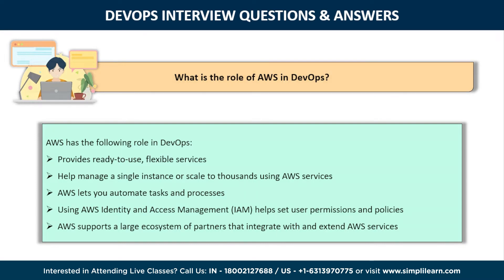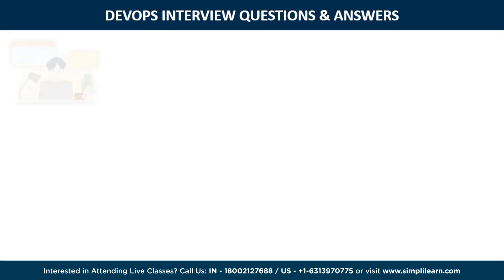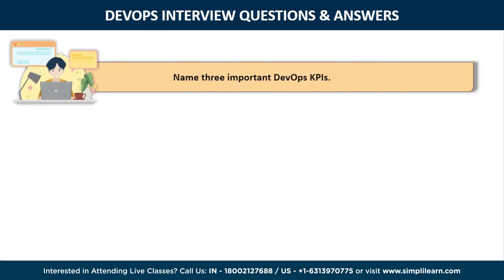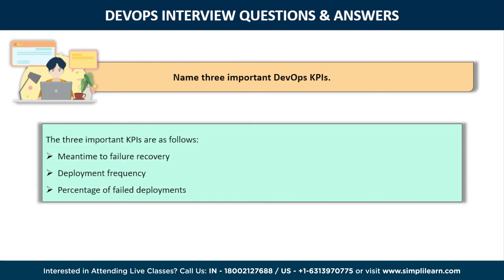The sixth question is: name three important DevOps KPIs. The three very important KPIs are as follows: Mean Time to Failure Recovery — the average time taken to recover from a failure; Deployment Frequency — the frequency at which deployments occur; and Percentage of Failed Deployments — the number of times a deployment fails.